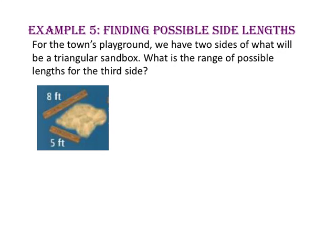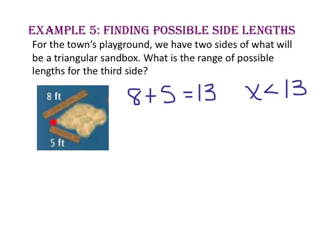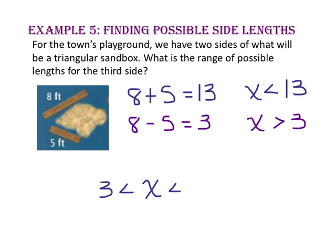In example 5, we will find possible side lengths. A triangle has two sides of a triangular sandbox. What is the range of possible lengths for the third side? We know any two sides must sum to more than the third. Adding 8 plus 5 gives 13, so x must be less than 13. Also, 5 plus x must be greater than 8, so x must be greater than 8 minus 5, which is 3. Therefore our inequality is: 3 is less than x, but x is less than 13.